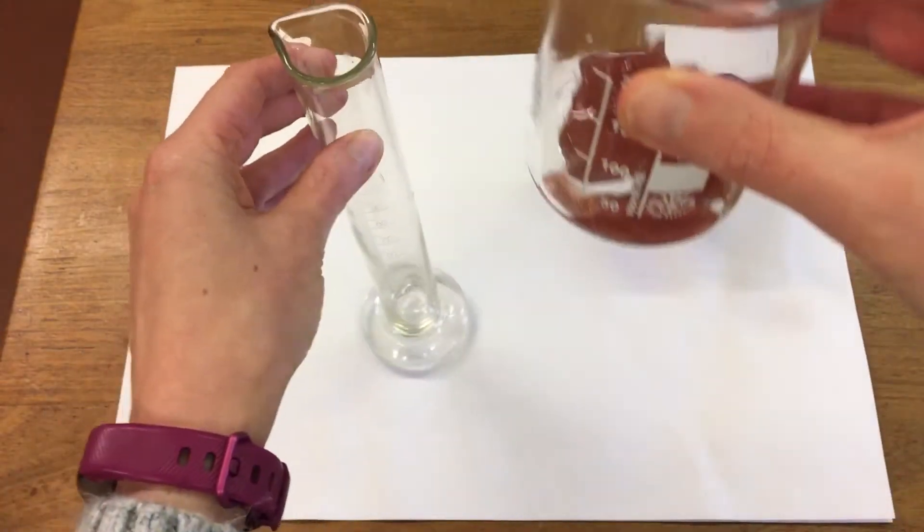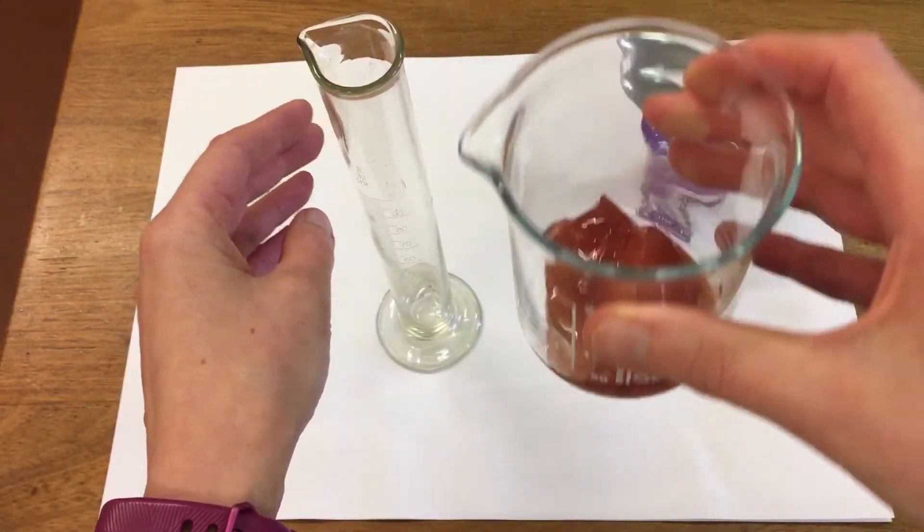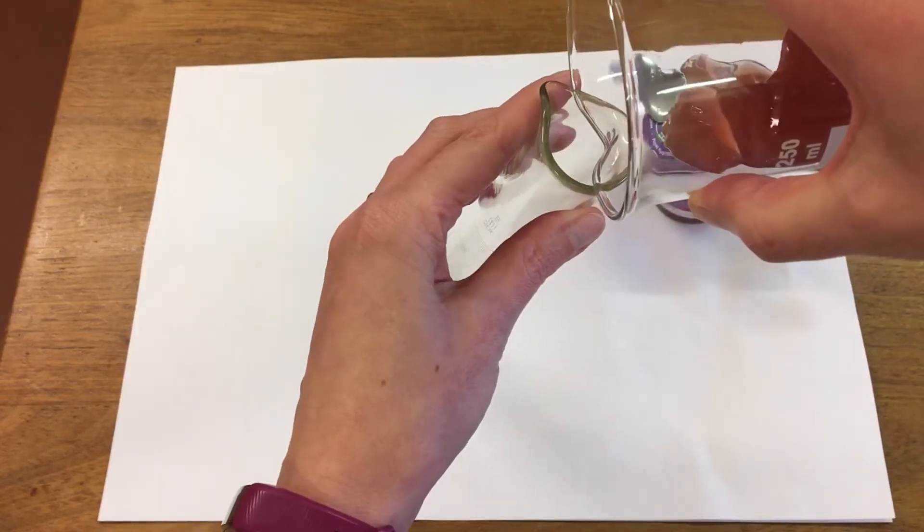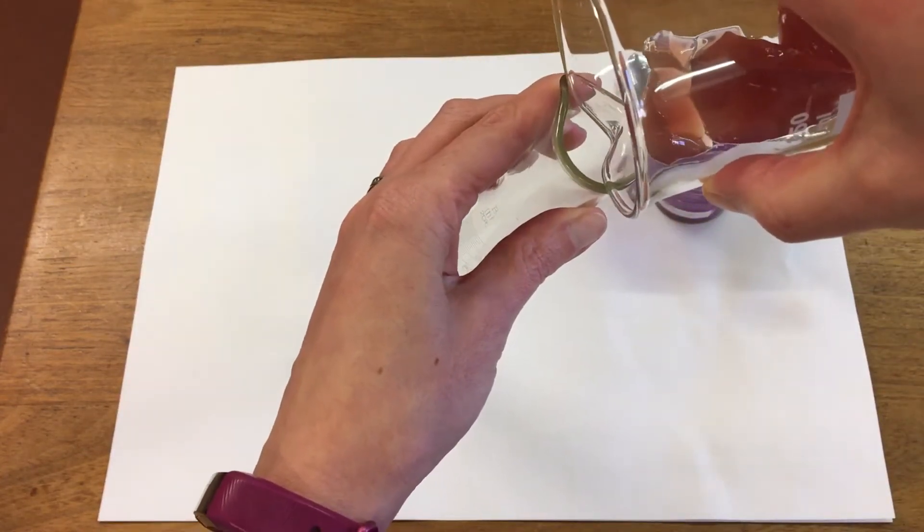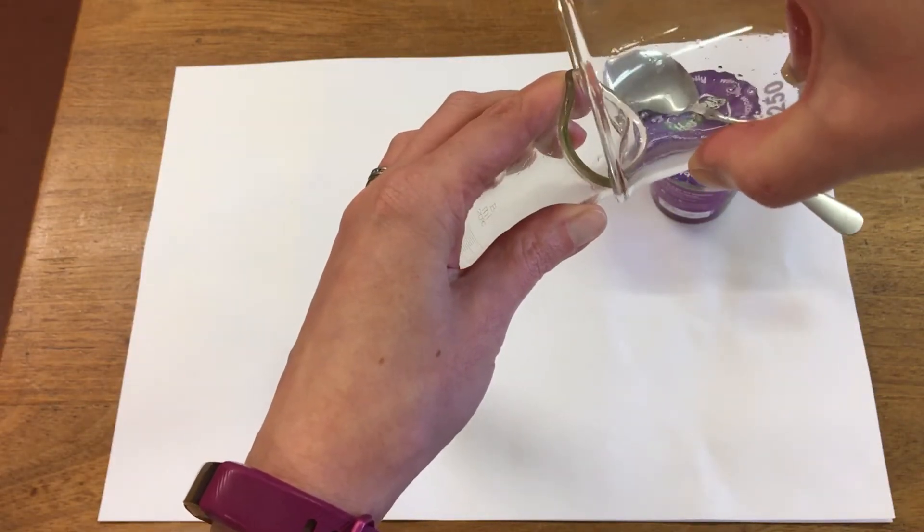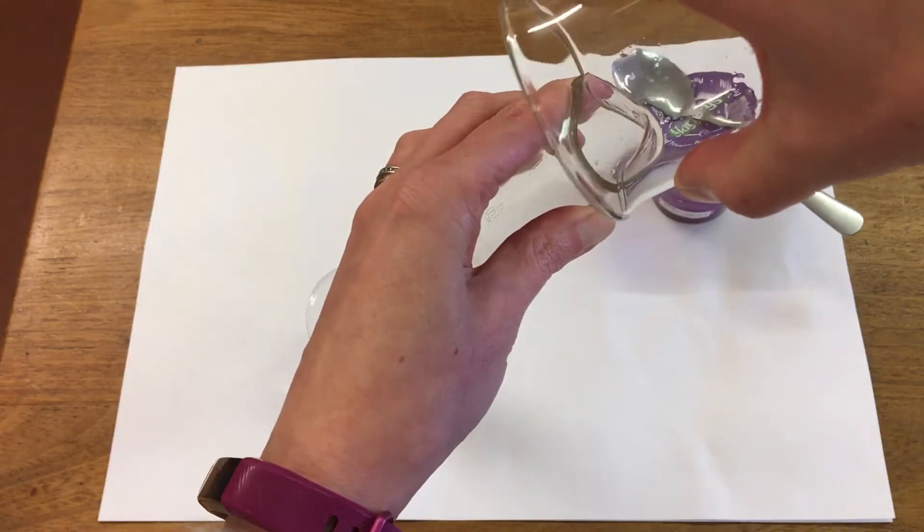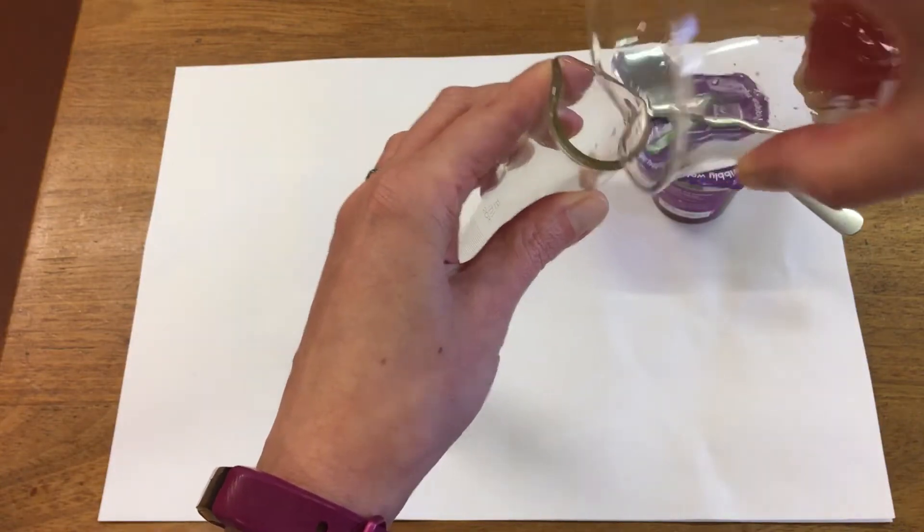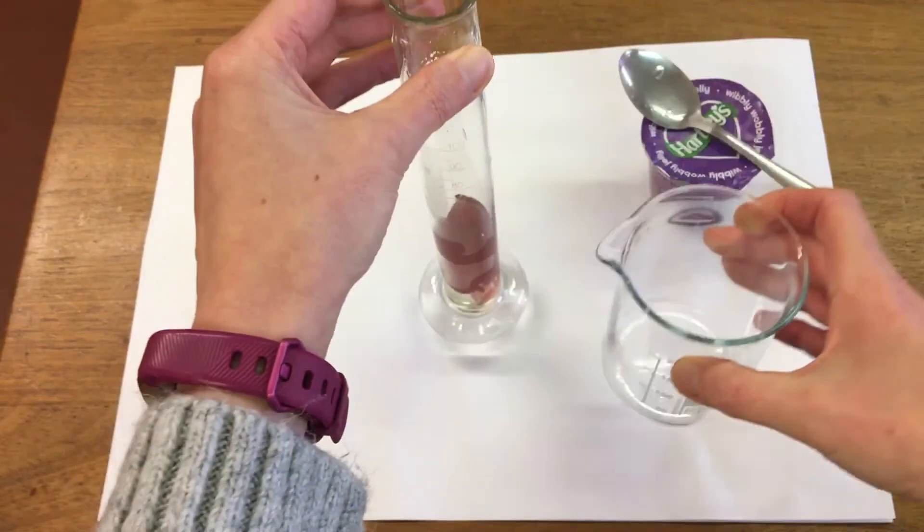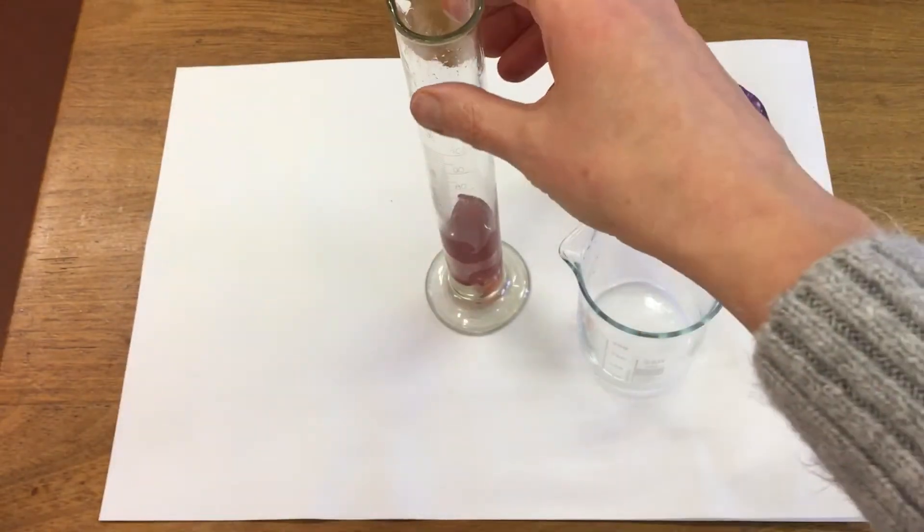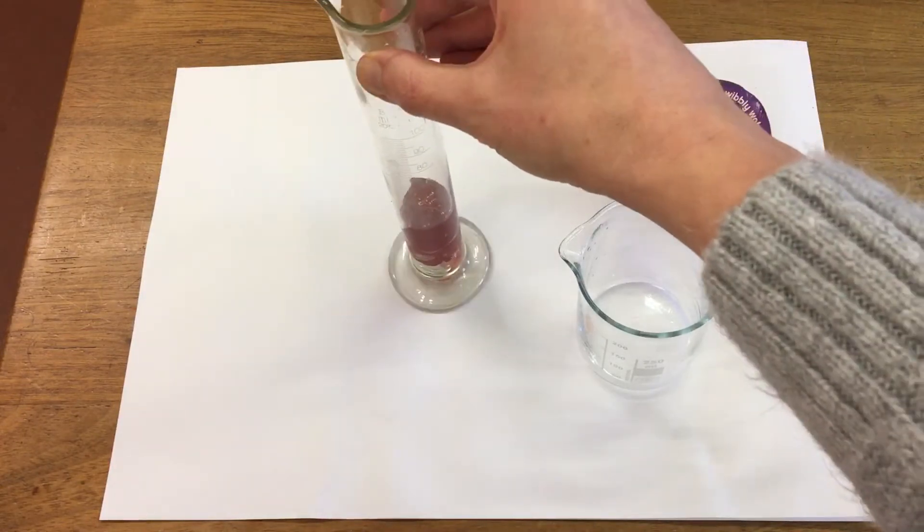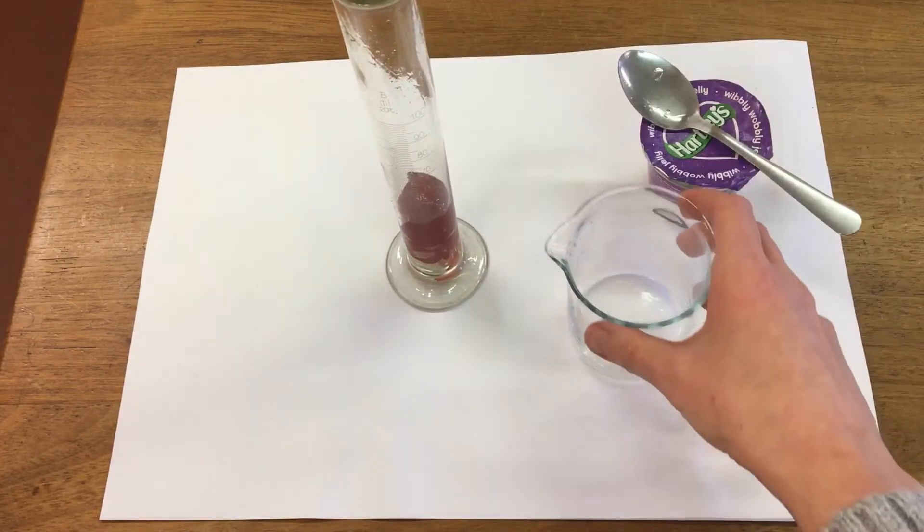We'll try pouring it into a measuring cylinder to see if it has a fixed shape. So do you think the jelly has a fixed shape?